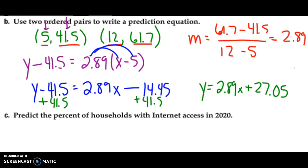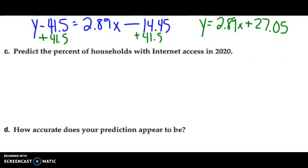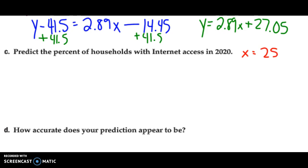So, now that equation right there, I can use to pick any year after 1995 and figure out the percent of households with internet access. So, part C says to find the number of households with internet access in the year 2020. So, if that's the case, you've got to think: How many years after 1995 is 2020? So, my x value is going to be 25 years. So, I go to my prediction equation and say y equals 2.89 times 25 years plus 27.05. Go to my calculator, put it all in just like it shows, and I find that y equals 99.3%. So, by the year 2020, there's going to be about 99.3% of households that have internet access.